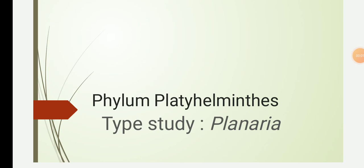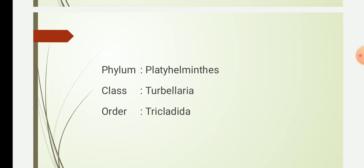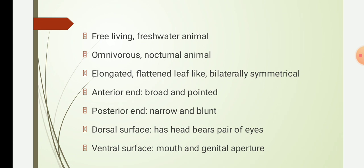Today we will study about Planaria. The classification of Planaria: it is classified into phylum Platyhelminthes, class Turbellaria, order Tricladida. It is a free-living acoelomate flatworm with a bilaterally symmetrical body. It is triploblastic, having a triploblastic body wall, hence it is included in phylum Platyhelminthes and class Turbellaria.